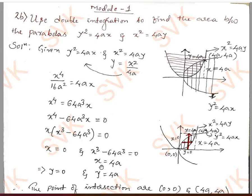Solving this expression, we get x = 4a. Substituting x = 0 and x = 4a into y = x²/4a: when x = 0, y = 0; when x = 4a, y = (4a)²/4a = 4a. Therefore y = 4a.